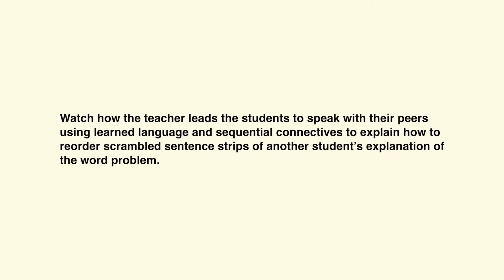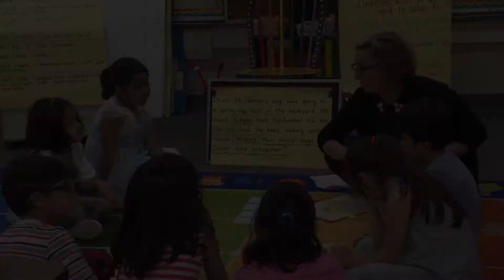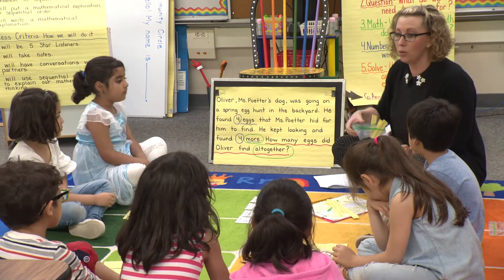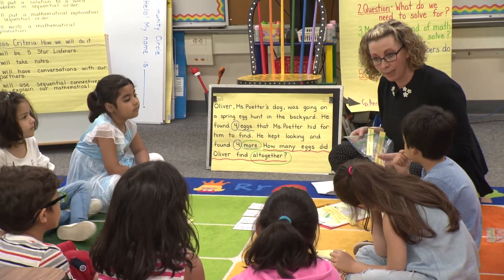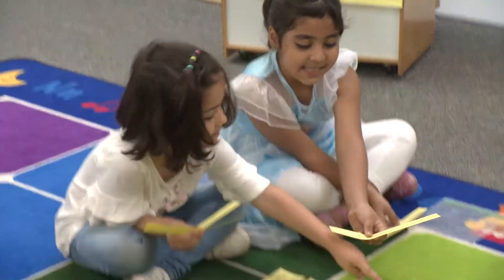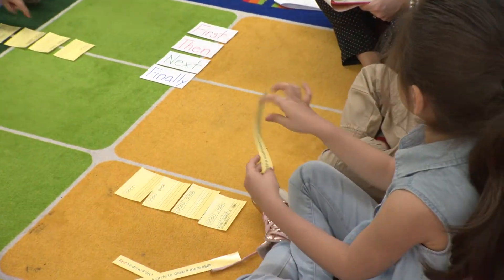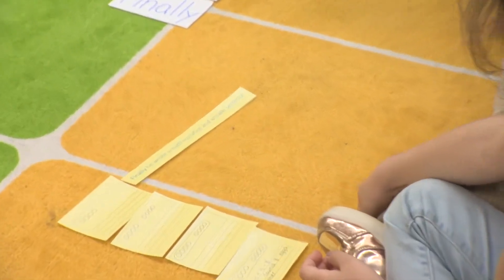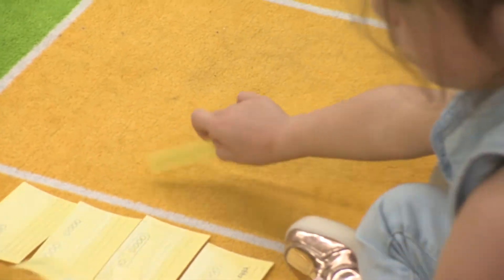Watch how the teacher leads the students to speak with their peers using learned language and sequential connectives to explain how to reorder scrambled sentence strips of another student's explanation of the word problem. Teacher: You and your partner can put the mathematical explanation in order. Students begin working together: I think this is first. I don't know. This is like it's small.